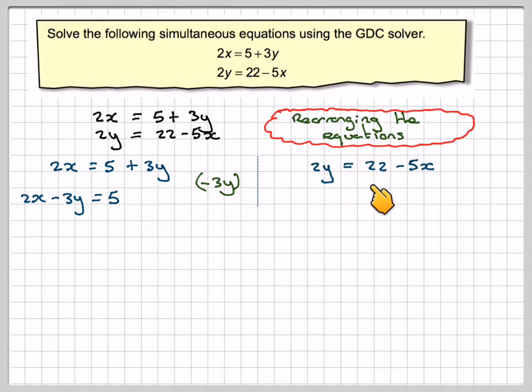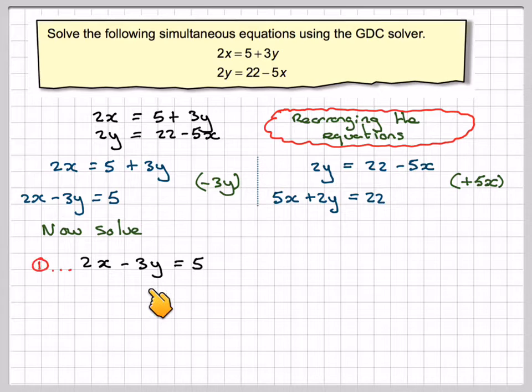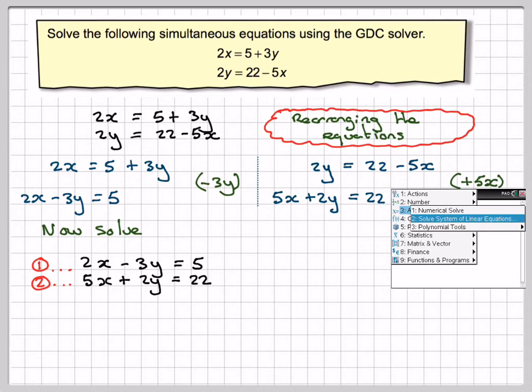And the other equation, 2y equals 22 minus 5x. So minus 5x is to add 5x, so you're going to have 5x plus 2y equals 22. Then writing those two out, 2x minus 3y equals 5, call that equation 1, and 5x plus 2y equals 22.